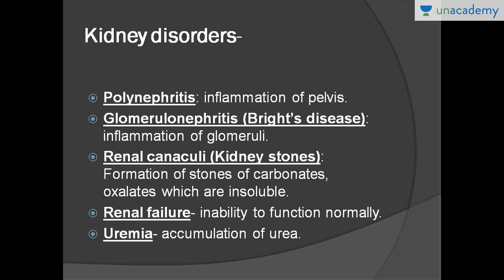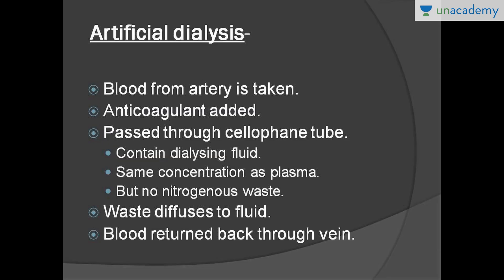We saw some of the excretory system disorders. Now we need to see how they can be treated. If the kidney is not able to function and cannot purify the blood of nitrogenous waste, we need the help of hemodialysis or artificial dialysis. Dialysis can be of various types: hemodialysis, peritoneal dialysis, and others. The best method among these is hemodialysis.